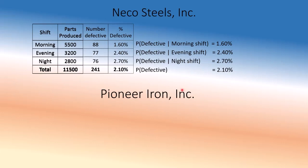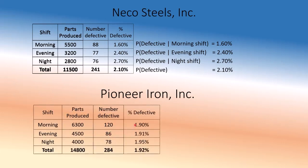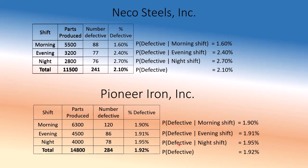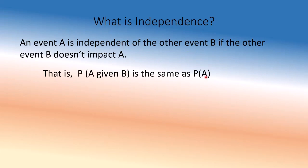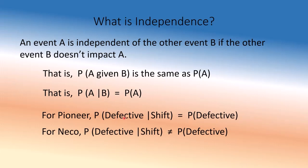Now let's think of another company called Pioneer. Morning 1.90%, evening 1.91%, night 1.95%, overall 1.92%. The shifts don't really matter much here — subject to one or two defective parts here and there, they are pretty much the same. It doesn't matter which shift you produce the part; the defective rate is the same. An event A is not impacted by another event B — that's independence. That means A given B is the same as A. For Pioneer, defective given shift was the same as defective overall, so shift didn't matter — defective and shift are independent events. For Neko, they are not independent, because shift determines how many parts are defective.